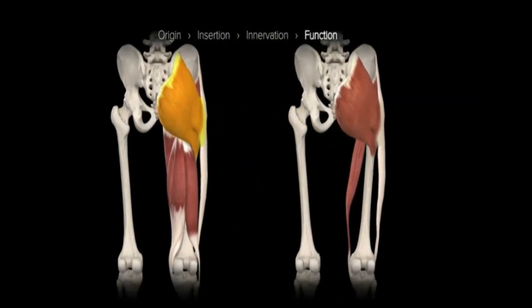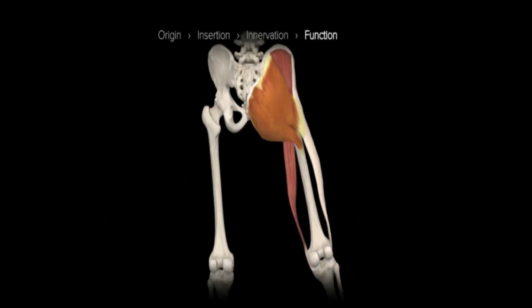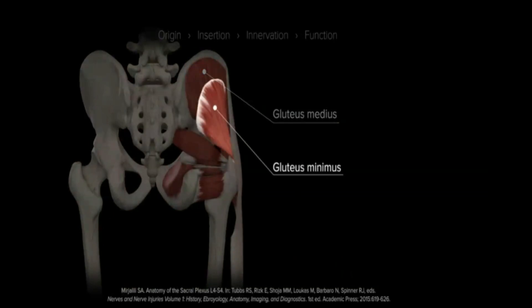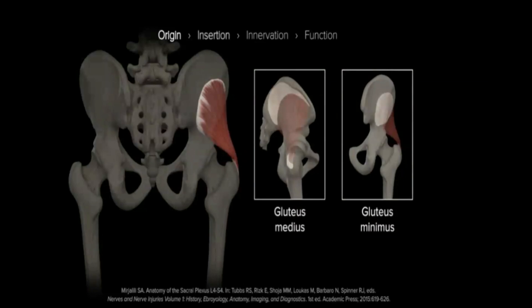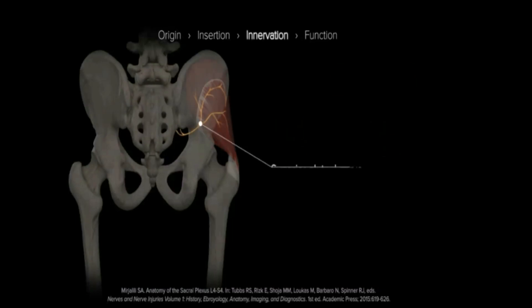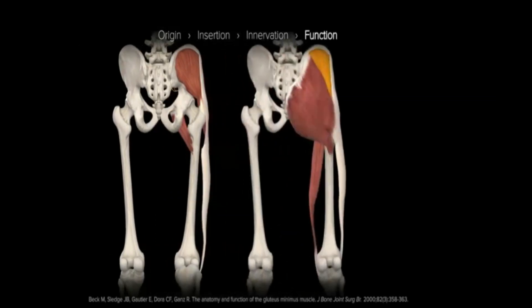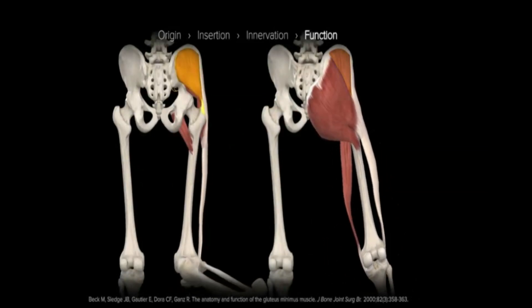Contraction of the gluteus maximus results in extension and lateral rotation through the hip joint and contributes to both abduction through its upper fibers and adduction through its lower fibers. Beneath the overlying gluteus maximus sits the gluteus medius, and further deep to that sits the gluteus minimus. Both are fan-shaped and originate between the anterior and posterior gluteal lines of the ilium and course inferolaterally to their insertion on the greater trochanter of the femur. Innervation of both the gluteus medius and minimus is from the superior gluteal nerve originating from the posterior divisions of the L4 to S1 nerve roots. Working in concert, these muscles function to produce abduction of the hip while resisting adduction and also produce internal rotation of the hip.